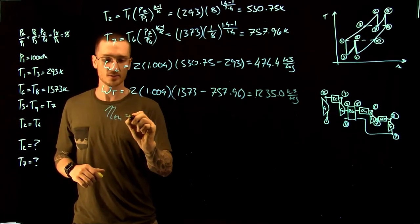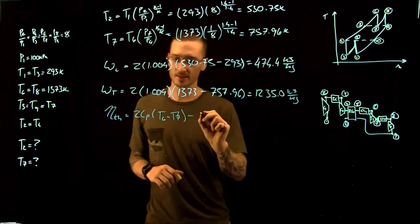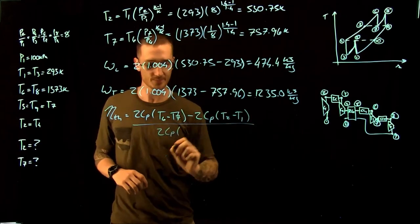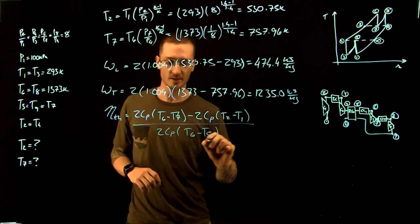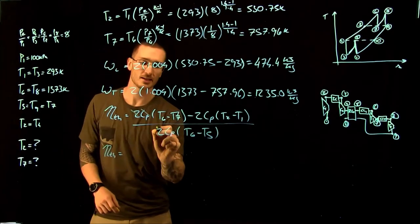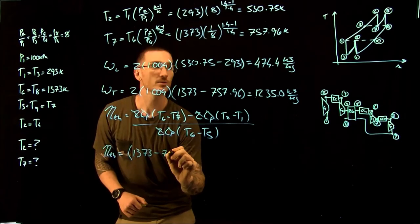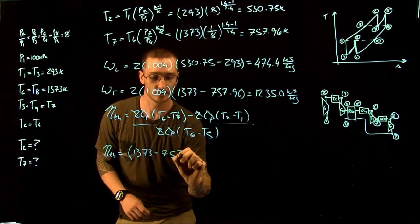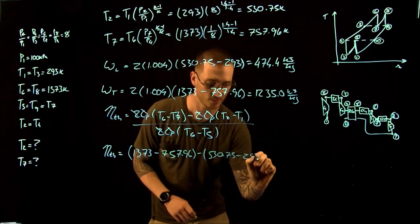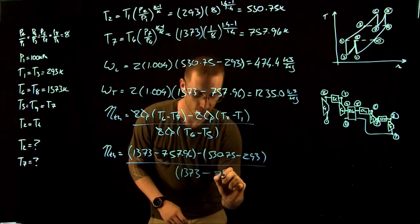Thermal efficiency = [2·Cp·(T6 − T7) − 2·Cp·(T2 − T1)] / [2·Cp·(T6 − T5)]. Since T5 = T7, the 2's and Cp's cancel: η = [(1373 − 757.96) − (530.75 − 293)] / (1373 − 757.96) = 0.6134, giving a thermal efficiency of 61.34%.